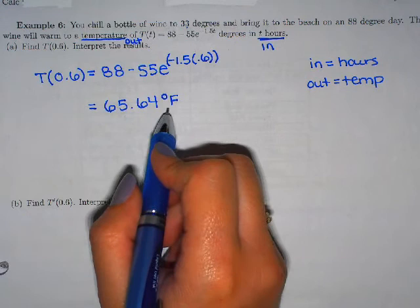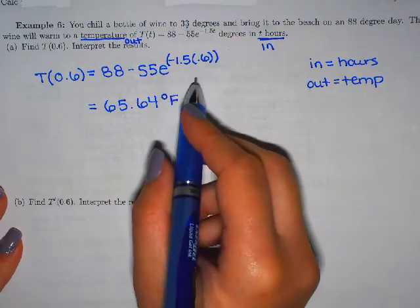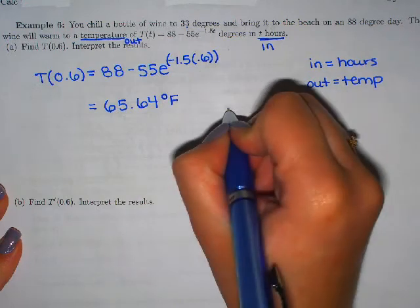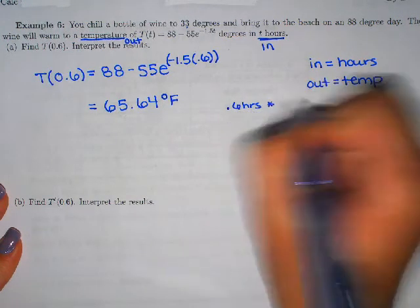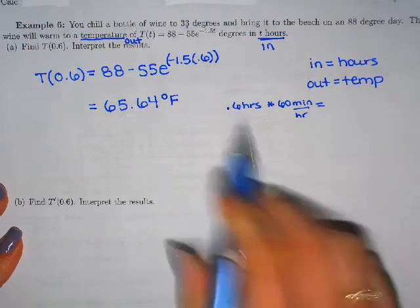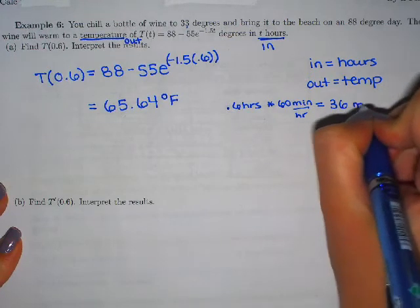So now we need to interpret the results. What is 65 degrees? That's the temp of the wine right after 0.6 hours. Well something that might make this easier to interpret would be changing this to minutes. So we could talk about 0.6 hours or we could multiply it by 60 minutes in an hour.